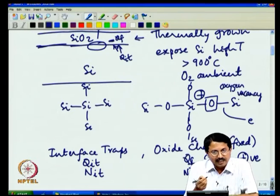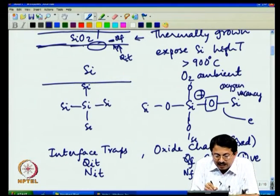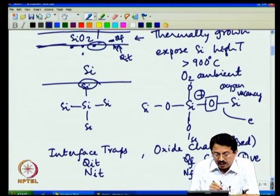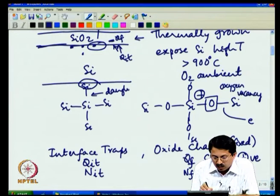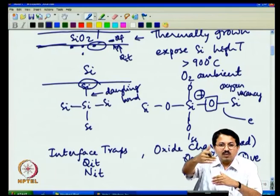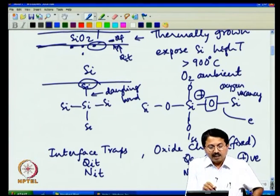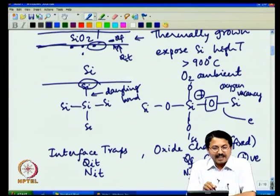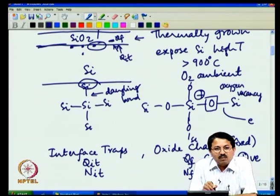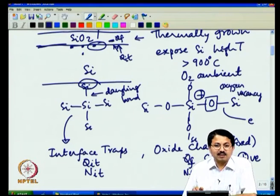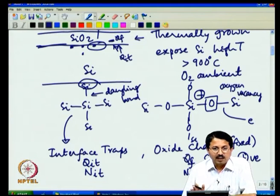At the interface, interface states arise because a silicon atom sitting at the interface bonds to neighboring silicon atoms below and beside it, but there is a missing silicon above — a dangling bond. If silicon were to continue upward, there would be another silicon atom there in a perfect covalent bonding. But at the interface, many silicon atoms have failed to find another silicon atom above because it is oxygen-rich silicon oxide, giving rise to interface states.